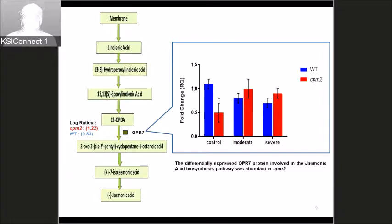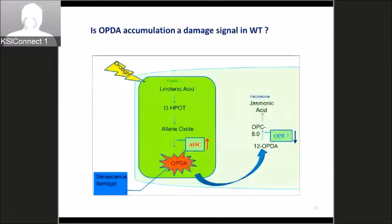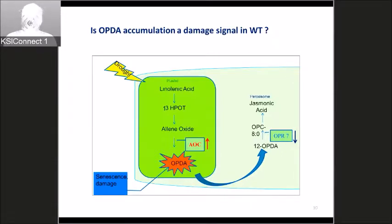Based on these results we propose a model in which, under drought stress, the AOC protein becomes highly abundant in the wild type relative to OPS7, which is less abundant. This may lead to accumulation of OPDA, a highly electrophilic species known to promote senescence and damage — as shown in Arabidopsis studies — and this might be the reason why the wild type performed worse under drought stress.